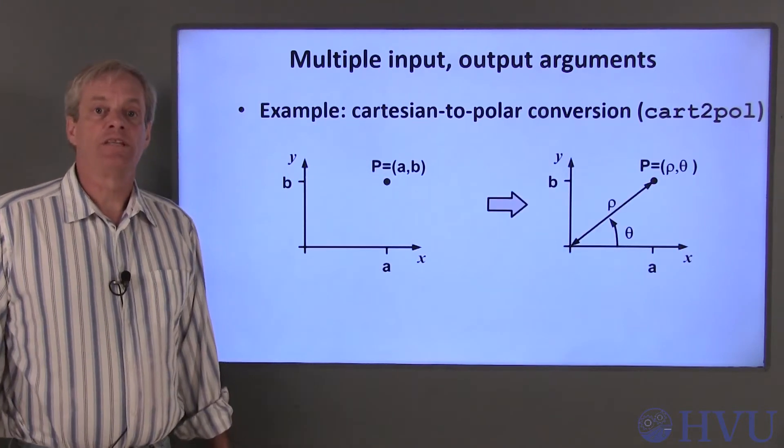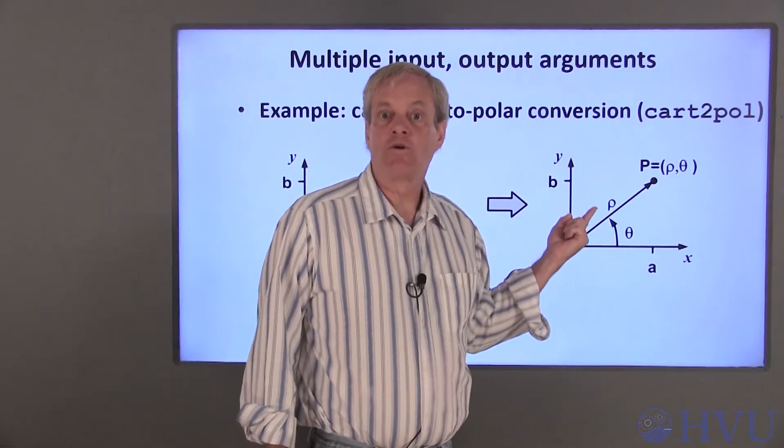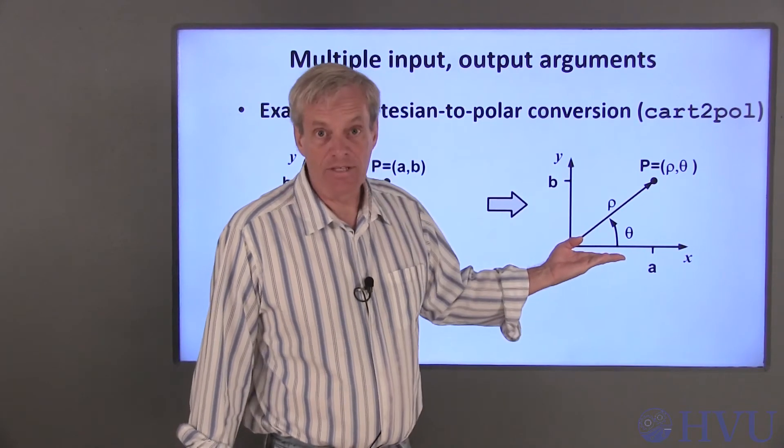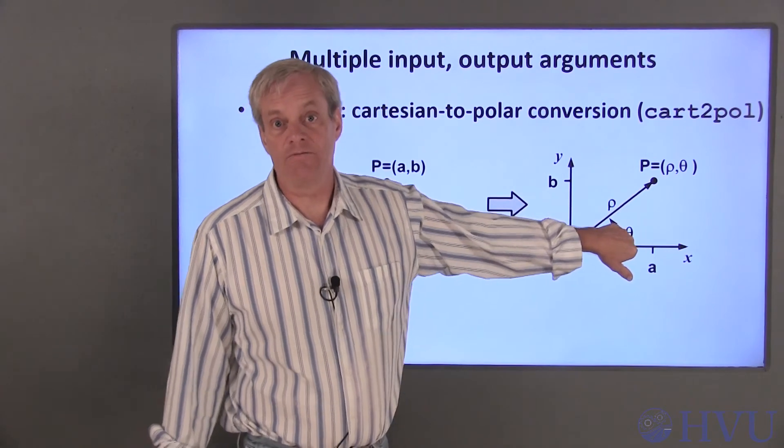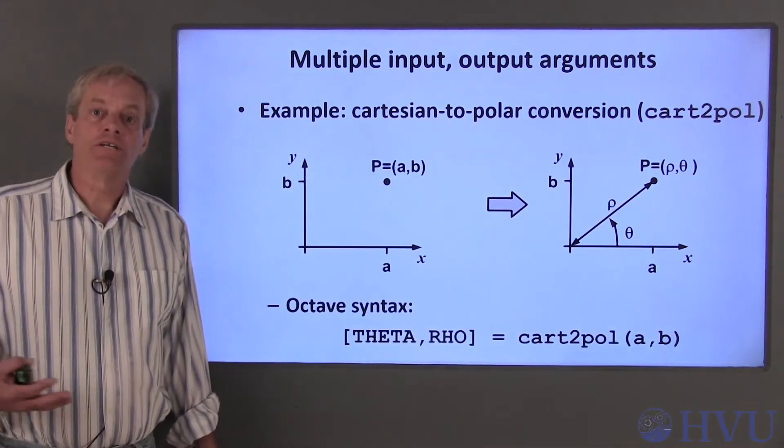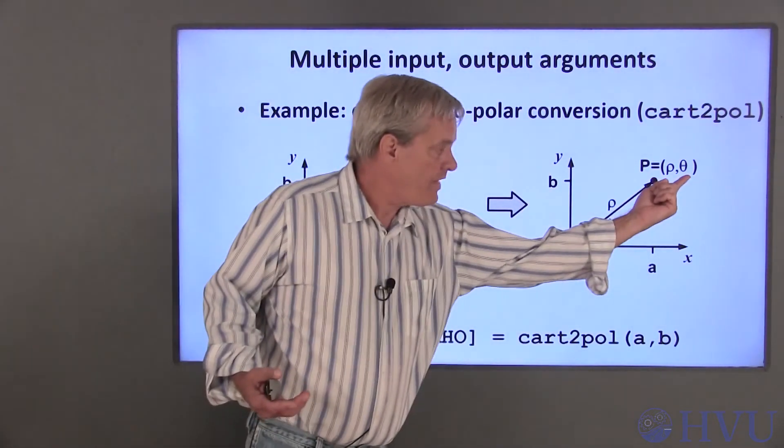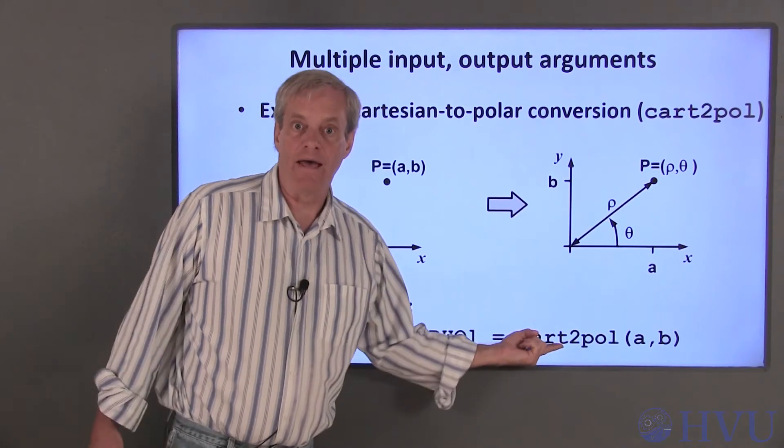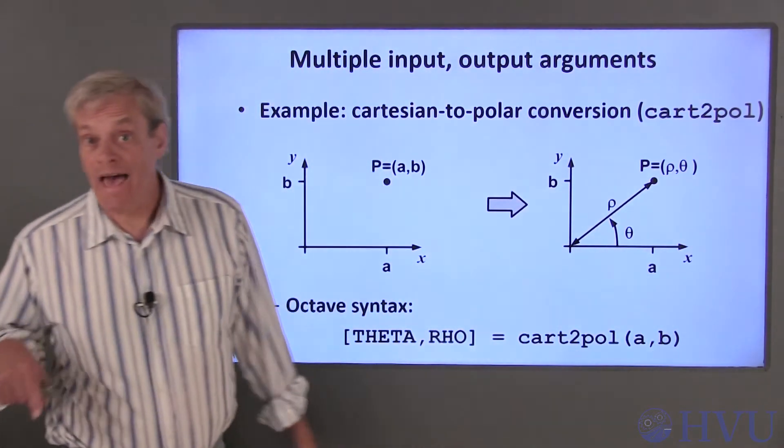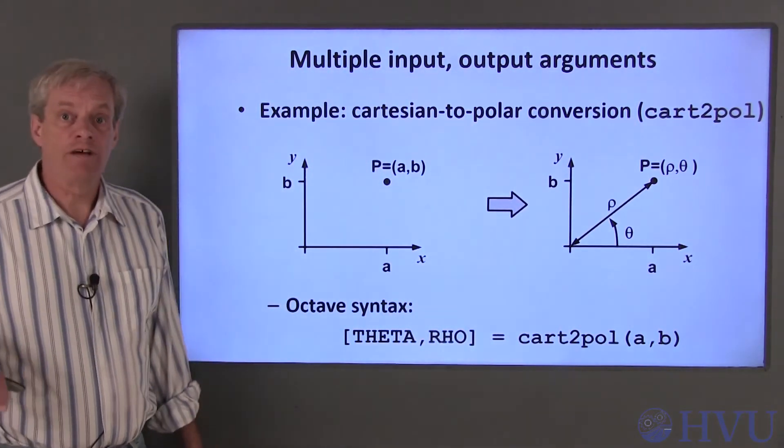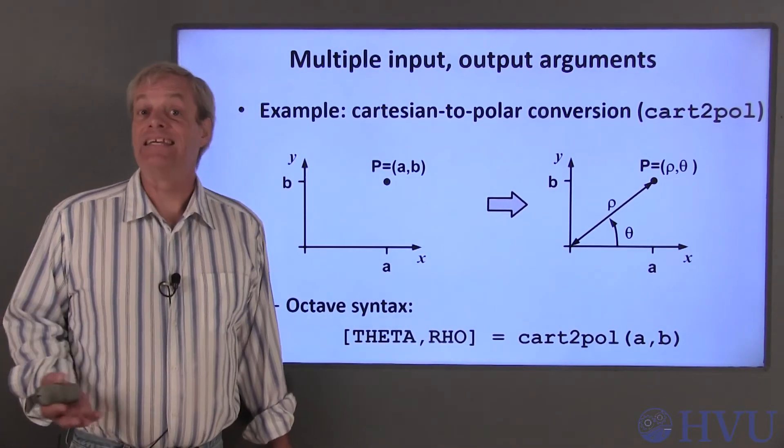Alternately, we can represent the point P in polar coordinates by its radial distance from the origin, which is the Greek letter ρ in this example, and the angular distance of the point from the positive x-axis, represented by the Greek letter θ on this figure. We can convert between the cartesian coordinates A, B and the polar coordinates ρ, θ with Octave's cart2pol command. The cart2pol command accepts as inputs the values A and B in that order and returns the values θ and ρ in that order. Keep the order of the arguments in mind. It's important.